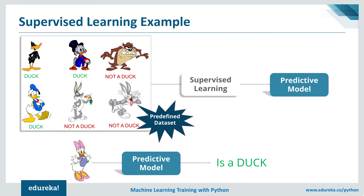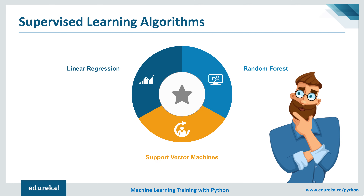You might be wondering why this category is called supervised learning. It is called supervised learning because the process of an algorithm learning from training data can be thought of as a teacher supervising the learning process. We know the correct answers; the algorithm iteratively makes predictions on training data and is corrected by the teacher. The learning stops when the algorithm achieves an acceptable level of performance. Some popular supervised learning algorithms include linear regression, random forest, and support vector machines — we'll discuss these in our next video.